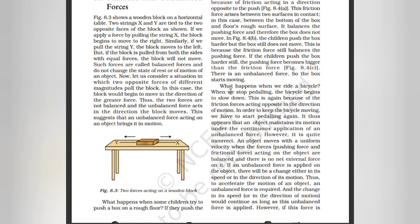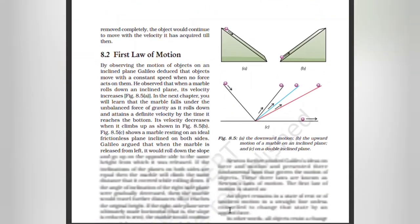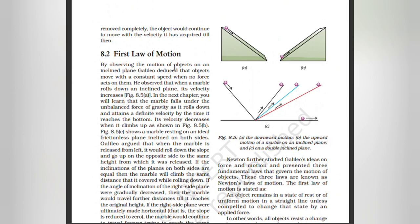What happens when we ride a bicycle? When we stop pedaling, the bicycle begins to slow down. This is again because of the friction force acting opposite to the direction of motion. In order to keep the bicycle moving we have to start pedaling again. It thus appears that an object maintains its motion under the continuous application of an unbalanced force — however, that is quite incorrect. An object moves with uniform velocity when the forces acting on it are balanced and there is no net external force. If an unbalanced force is applied, there will be a change either in its speed or direction of motion. If the force is removed completely, the object would continue to move with the velocity it had attained till then.